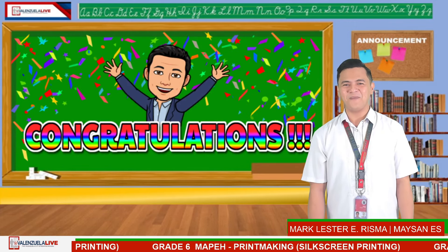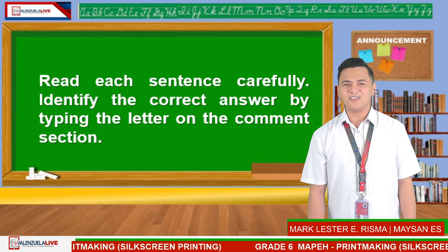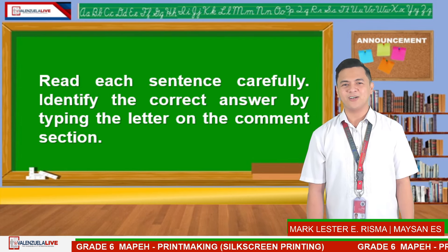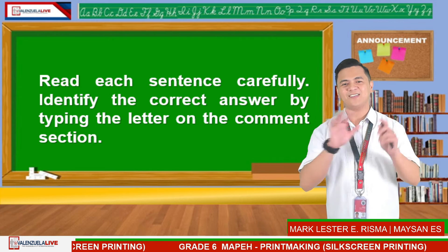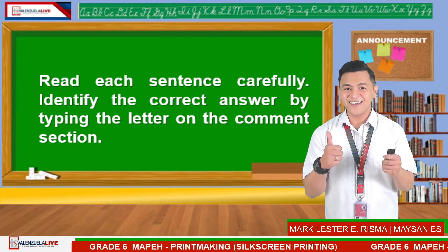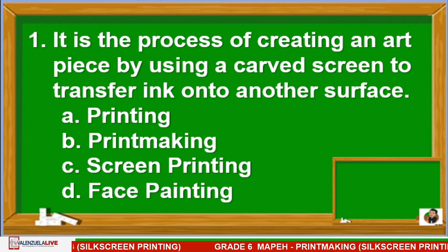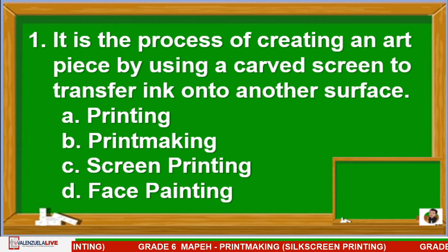Congratulations for making it today! For our final activity, read each sentence carefully and identify the correct answer by typing the letter in the comments section. I will give you 10 seconds to key in your answer. Number 1: It is the process of creating an art piece by using a carved screen to transfer ink onto another surface. Is it A: Printing? B: Printmaking? C: Screen Printing? Or D: Face Painting?